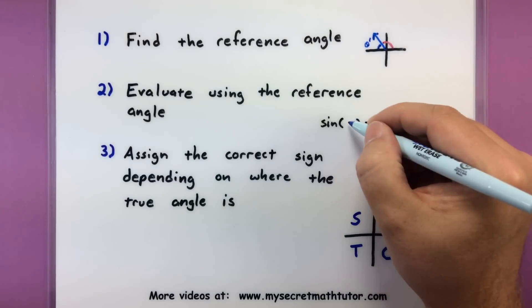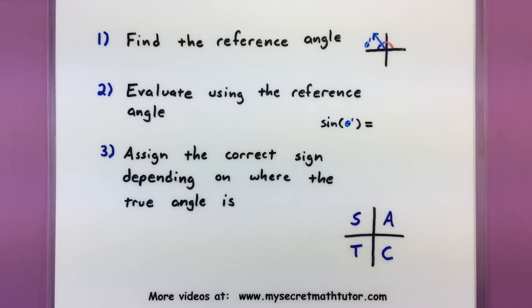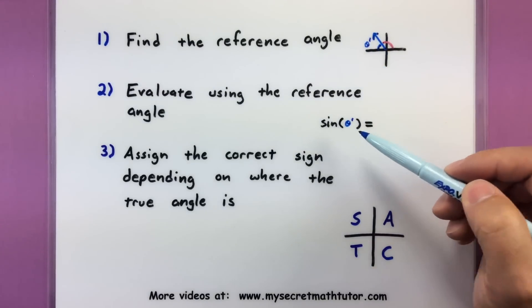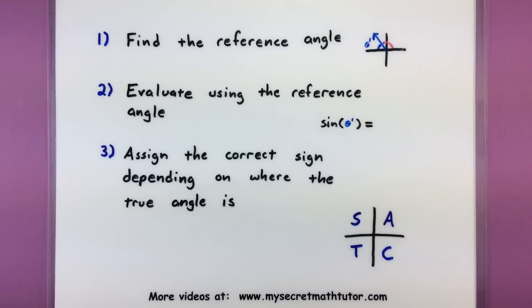Once you have that reference angle it will be between 0 and 90 degrees. So you can use that to go ahead and figure out the value of your trigonometric function. Keep in mind that the value of this trigonometric function won't be exactly the same as maybe what you're looking for, but if they are different they're only going to be different in terms of either a positive sign or a negative sign. So you pretty much have all the information you need, you just need to attach the proper sign to it.